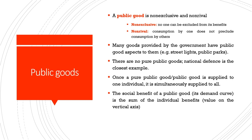The second important characteristic is non-rival consumption, which means that consumption by any one person does not preclude consumption by others — it does not reduce the amount that can be consumed by others. Many goods provided by the government have public good aspects, for example national defense, street lights, and public parks.